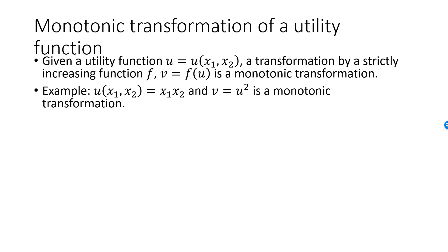Here is an example. Given the utility function u = x1·x2, suppose I transform each utility level u into a new utility level v using the strictly increasing function v = u². Then the transformation is monotonic. Since u = x1·x2 and v = u², we have v = x1²·x2². The utility function v is a monotonic transformation of the utility function u.